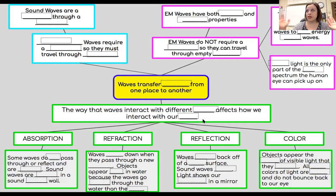Obviously, we don't live in a void of space where there's not all kinds of matter. Right now, my voice is echoing because it's hitting my wall. I'm seeing the light. So the way that we interact with different, or I'm sorry, waves interact with different mediums affects how we interact with our world. So there's four main ways that waves interact: absorption, refraction, reflection, and color.